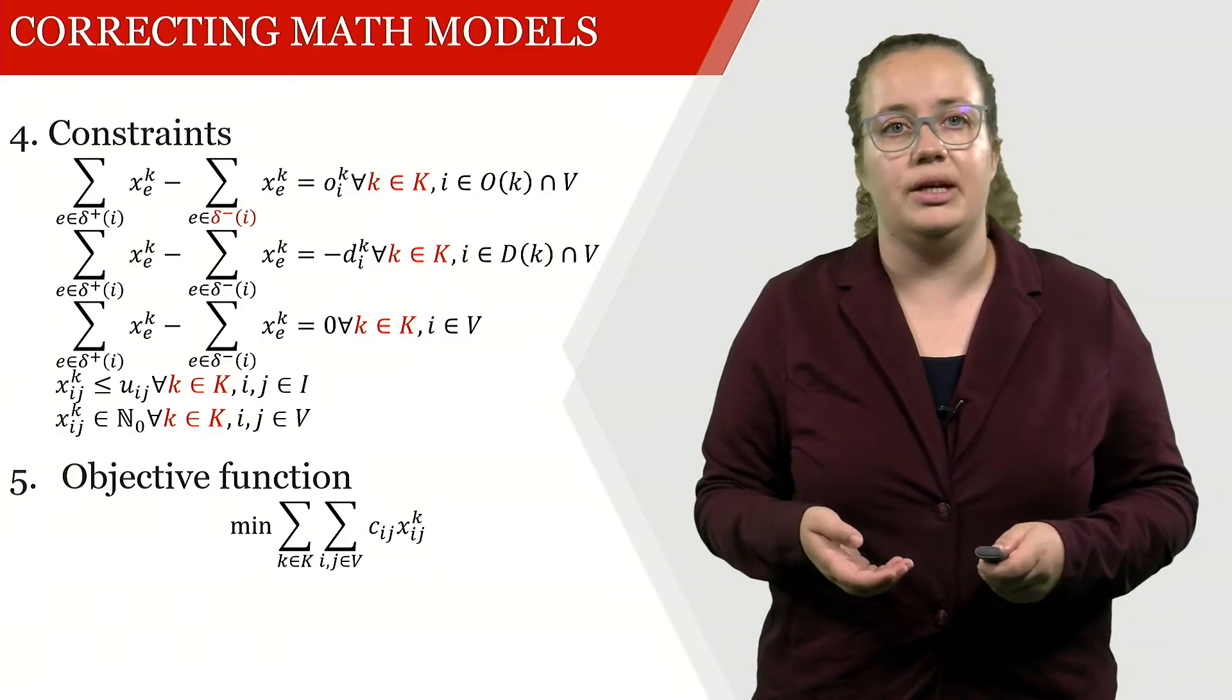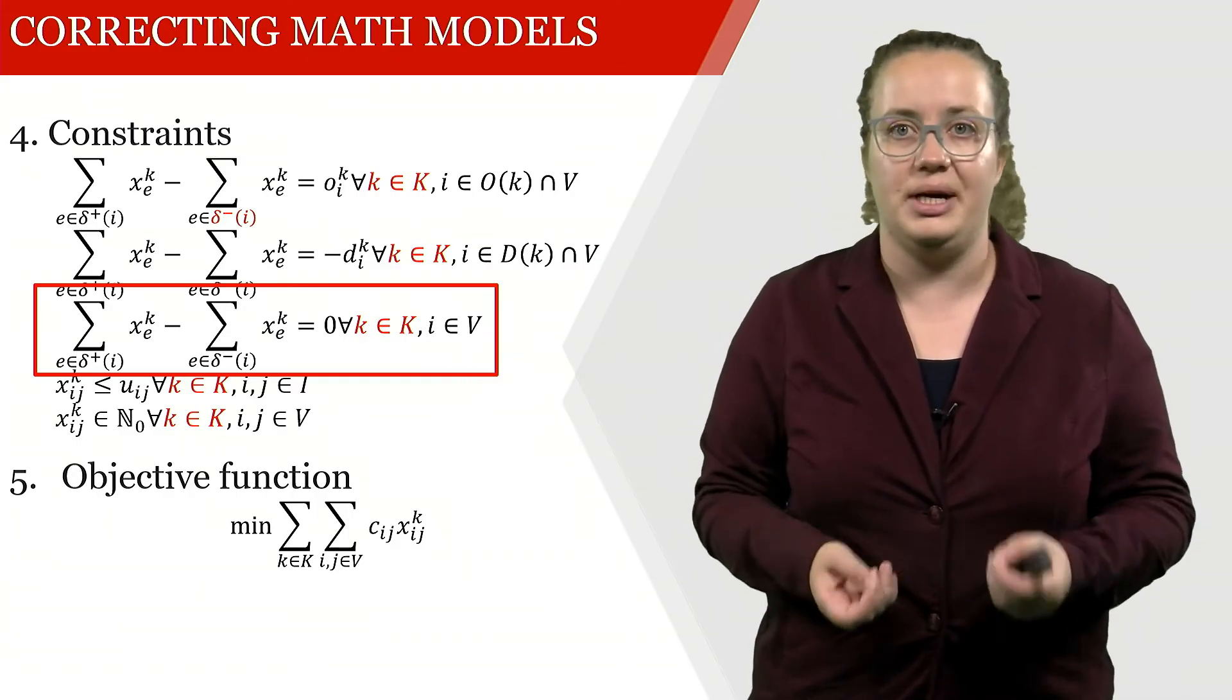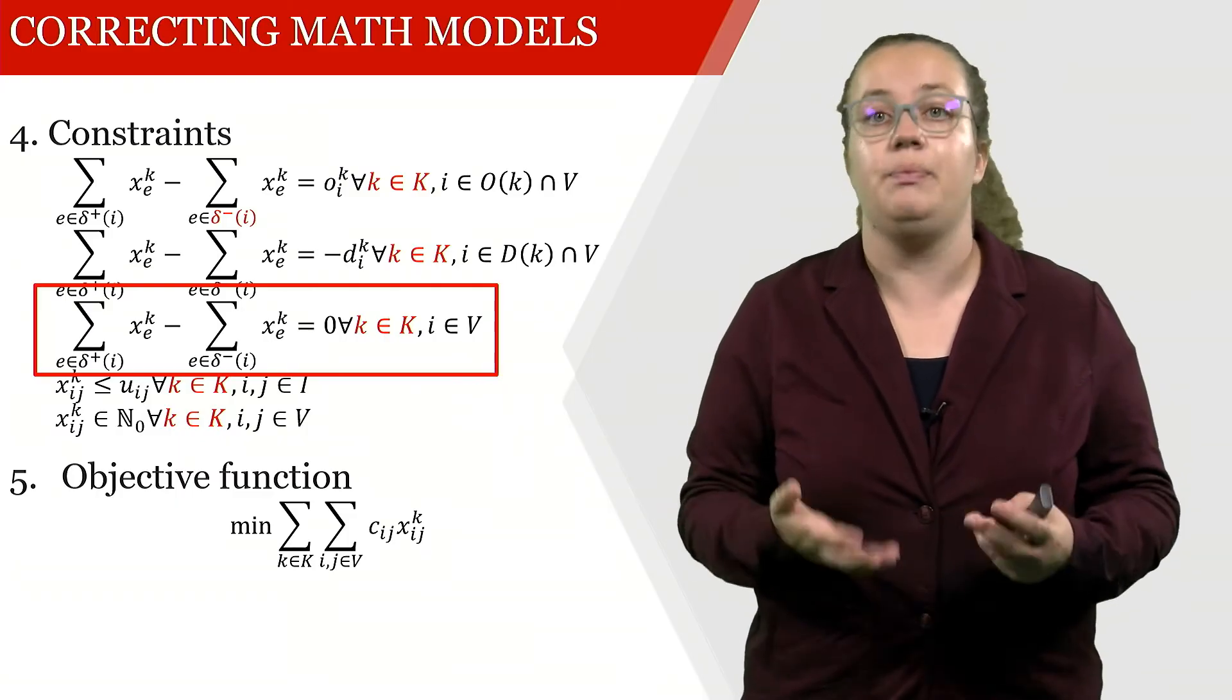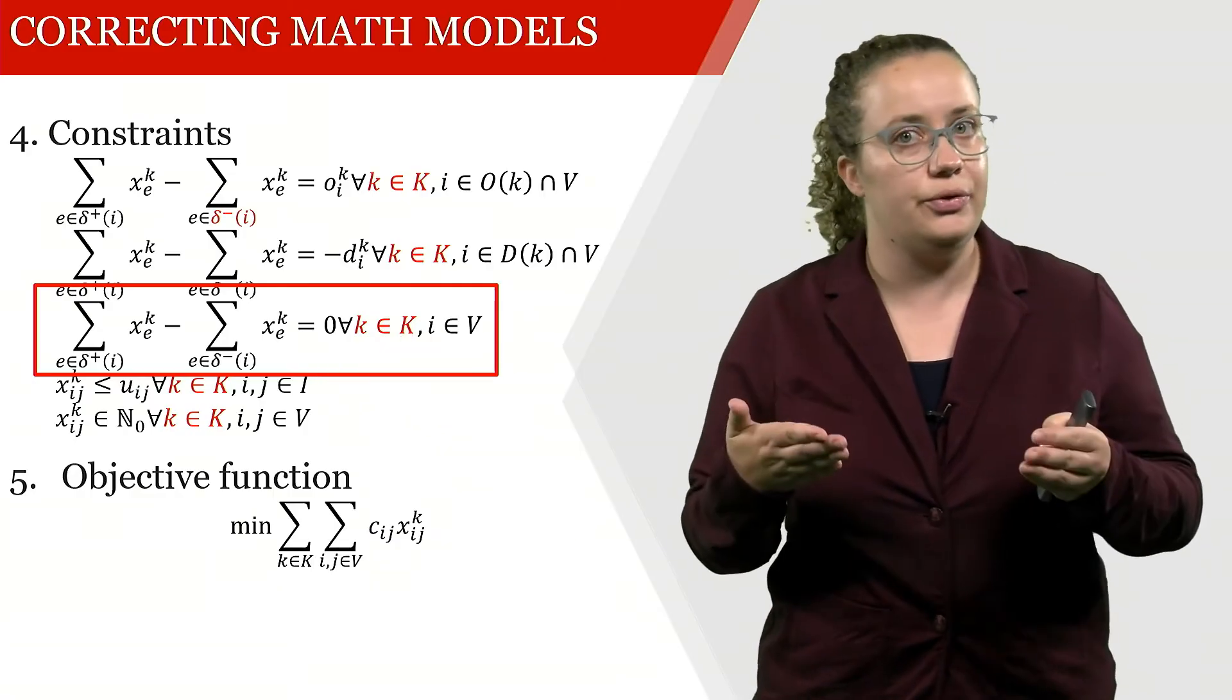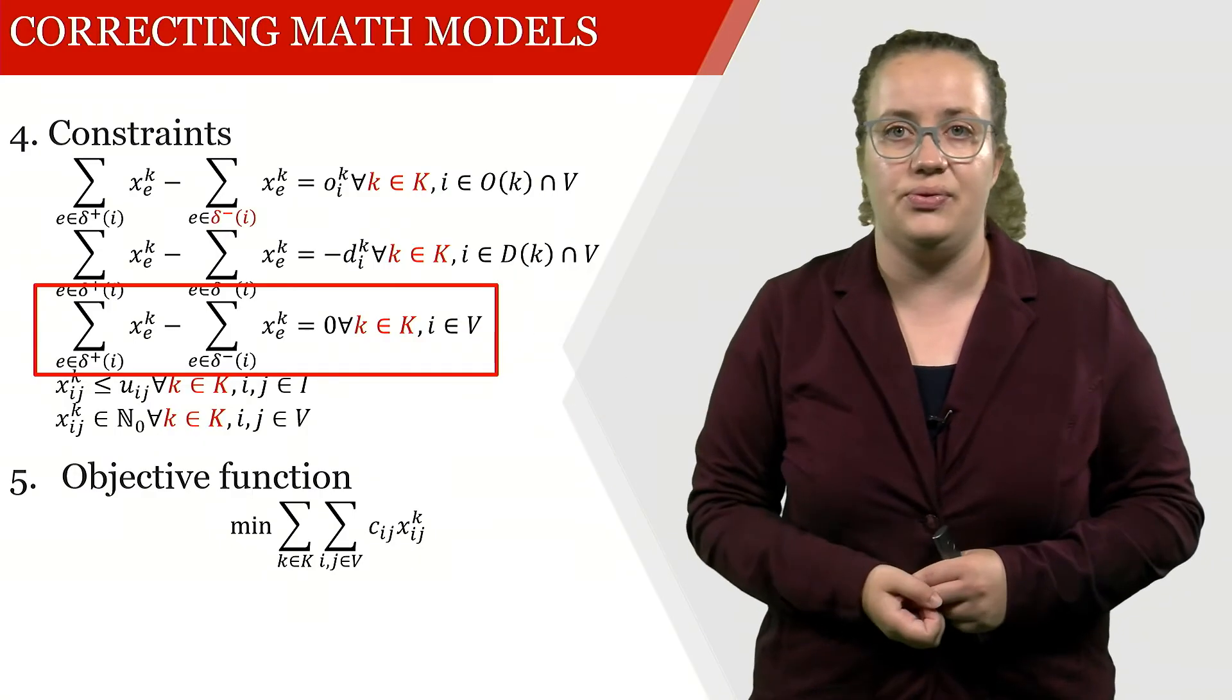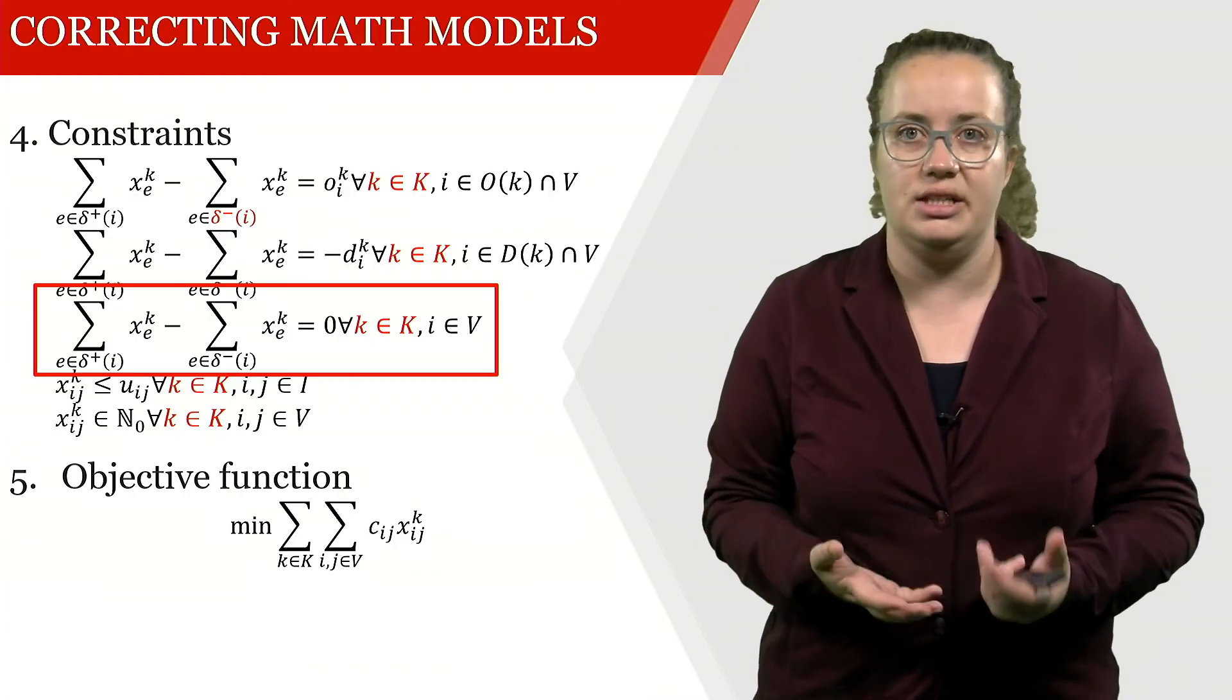Now we're continuing looking and the next thing that we're seeing is this constraint. Let's briefly think about: our k is now the passengers that travel from Rome to Amsterdam and we are actually looking at this constraint for i being Rome. Then what we're saying is that the number of people that go into Rome of this particular passenger type equals the number of people that leave Rome. But we actually up here already specified that this should be the number of people that are interested in traveling from Rome to Amsterdam. So these two constraints clearly contradict each other.